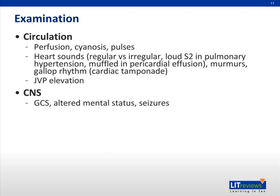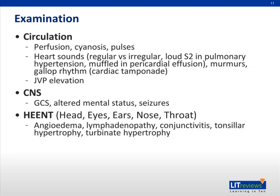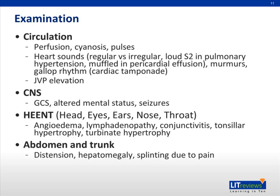Check the child's Glasgow Coma Scale. Is there altered mental status or seizures to suggest a neurological cause for the respiratory distress? Look for angioedema, signs of infection such as lymphadenopathy, conjunctivitis, and tonsillitis. Be sure not to miss the abdomen for any distension, organomegaly, or splinting due to pain.